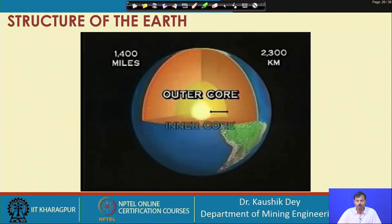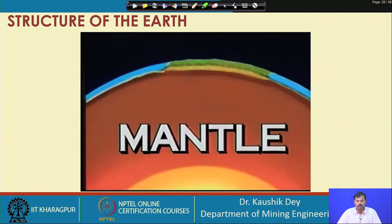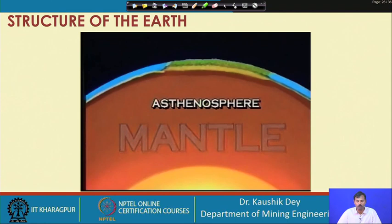Nickel and iron are probably the main elements of the outer core. Next is the mantle, which is around 2900 kilometers after the outer core. Geologists think that most of the mantle is solid rock; however, towards the top of this layer there exists an area of hot thick molten rock. The inner core and outer core are almost in a molten stage, while the mantle can also be cool and rigid.